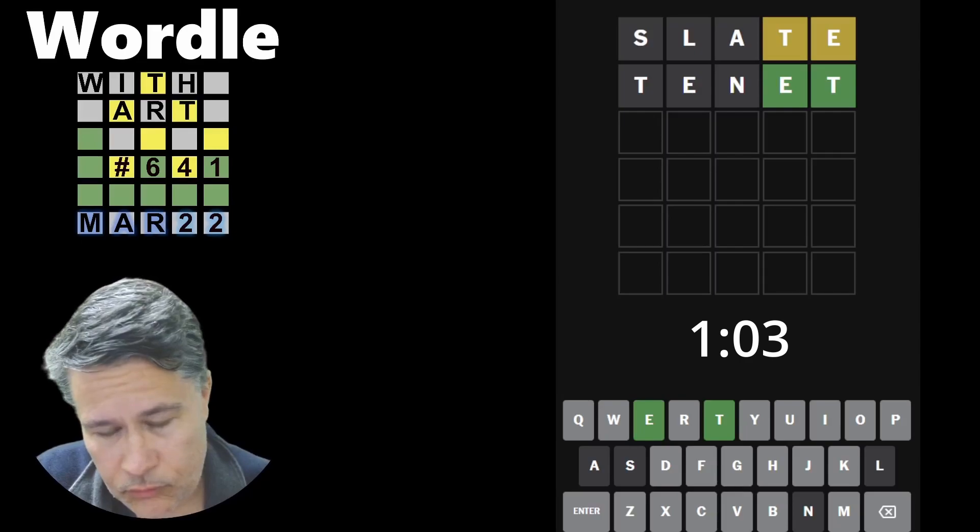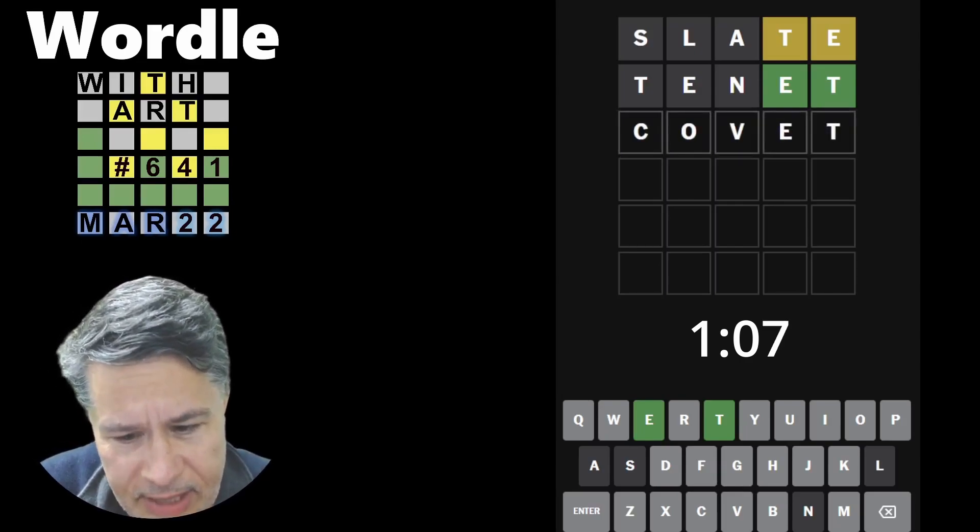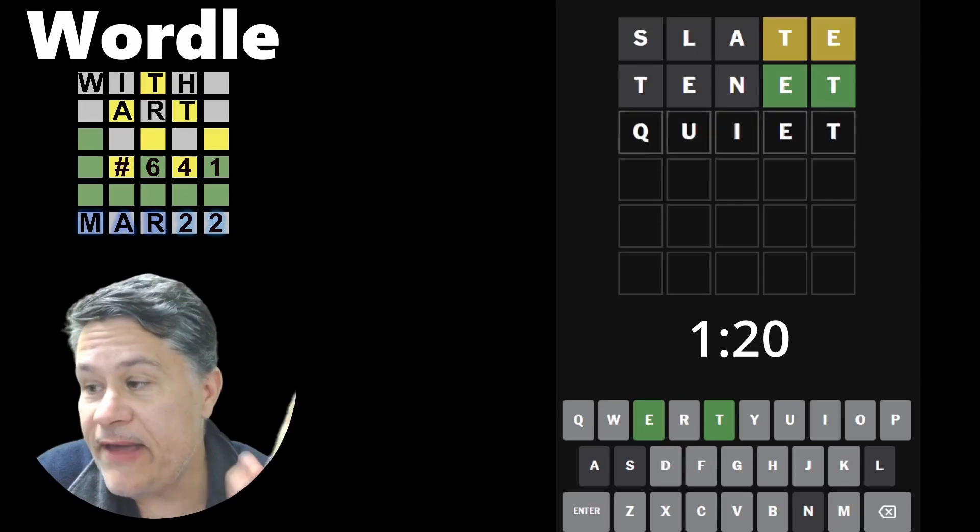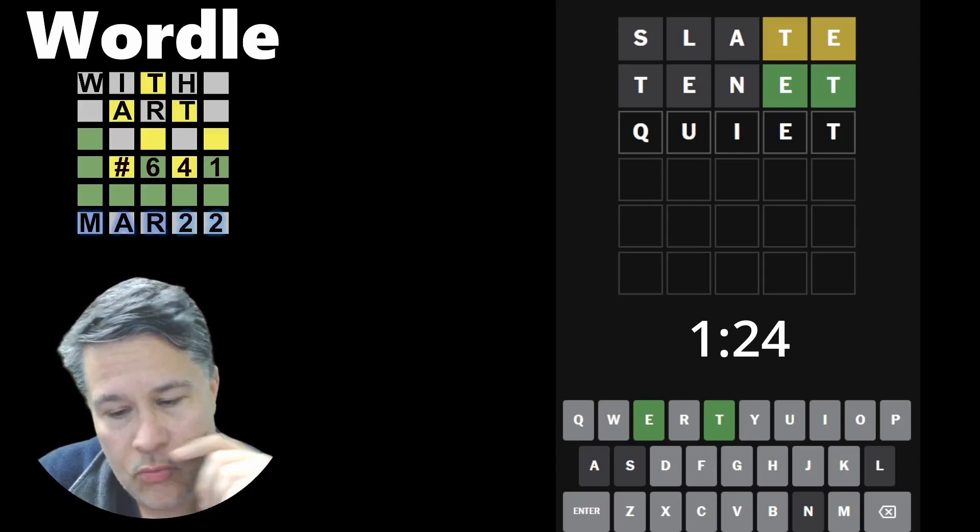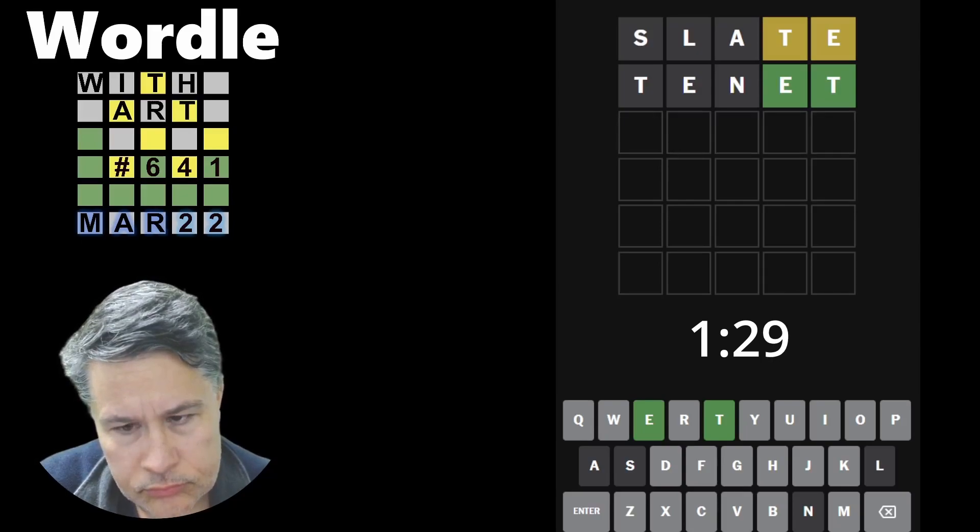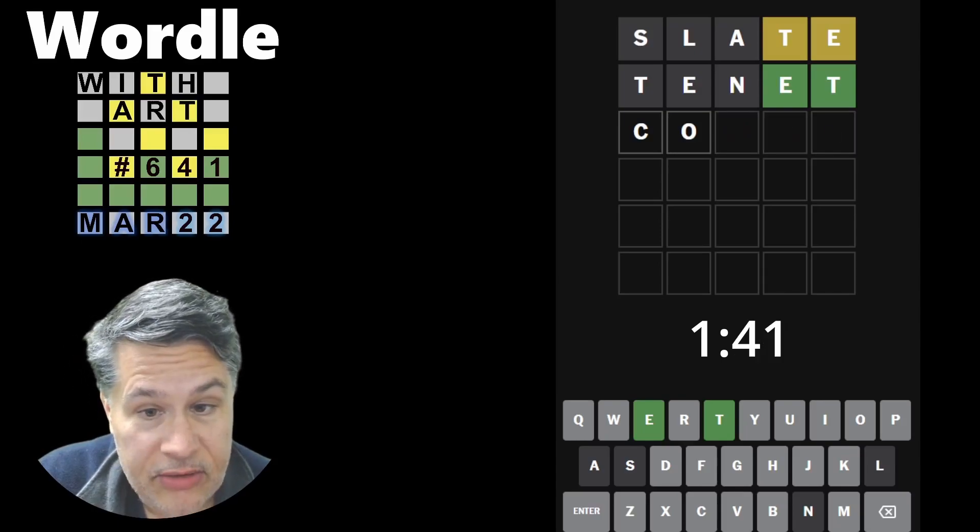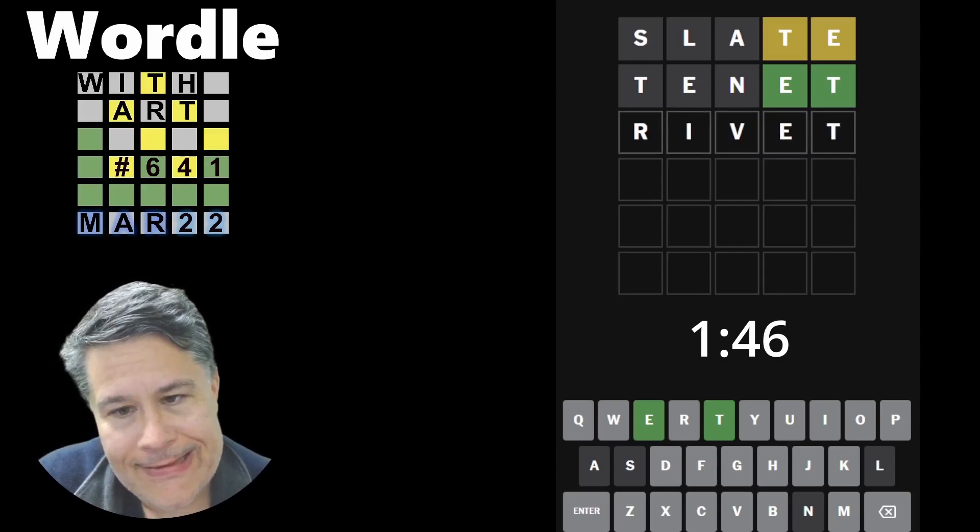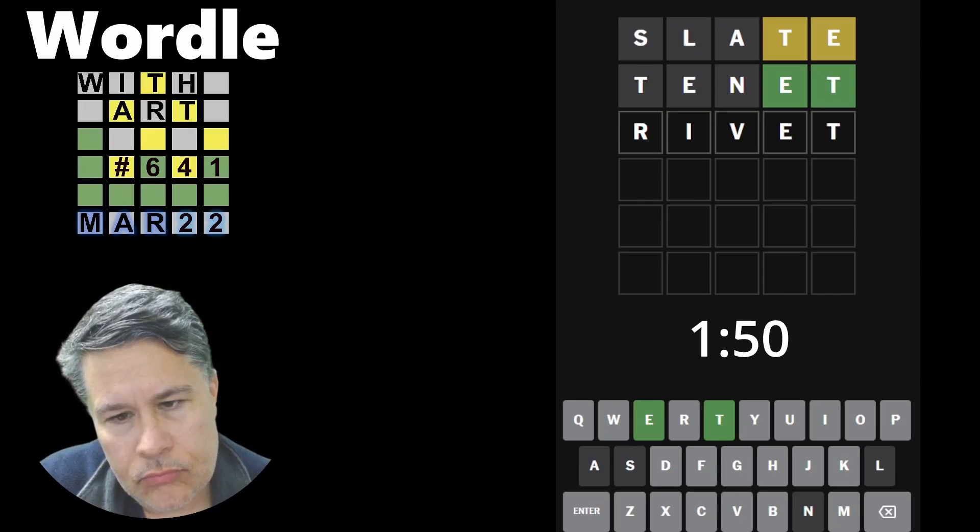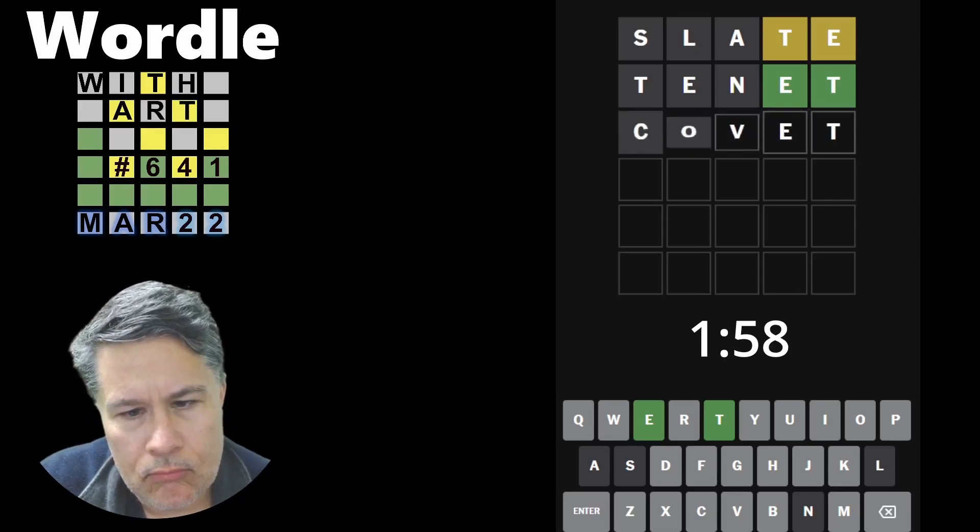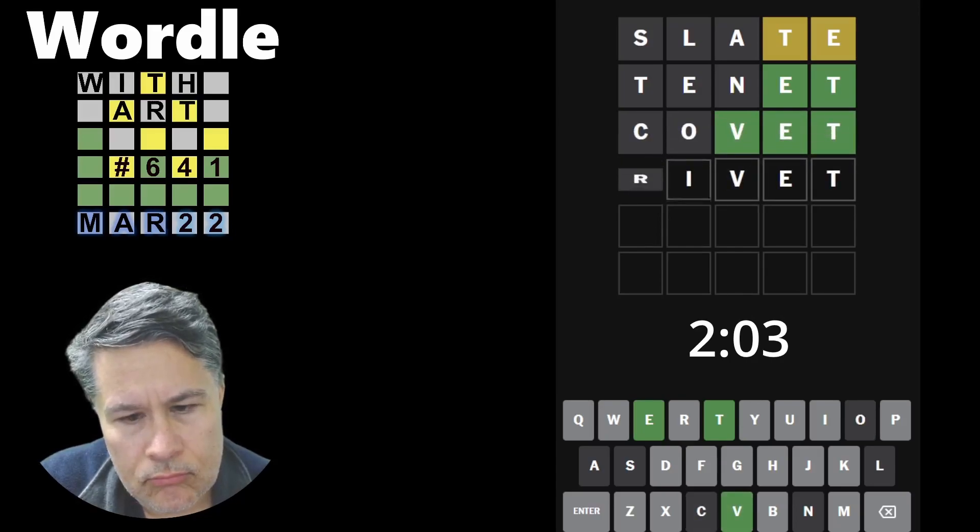I immediately see Covet. I see Covet immediately. We haven't had that one. It's not a bad guess. But guess what? I also see Quiet. We've had Quiet, though, okay? We have had Quiet. So we do not want that. Which brings me back to Covet. It could also be Rivet. It could be Rivet. That's a good one. Rivet. Covet. I think Covet would be a bit better. We'll try Rivet.